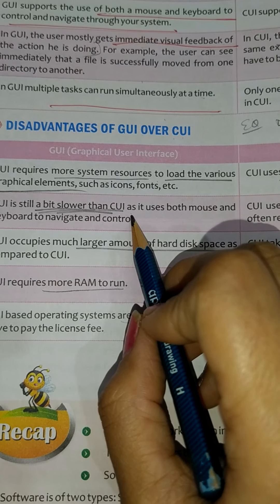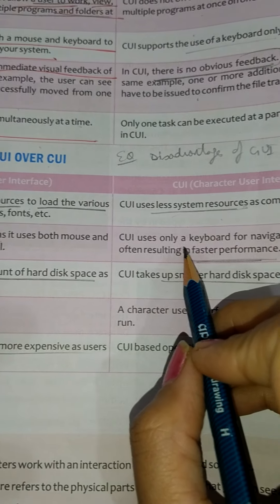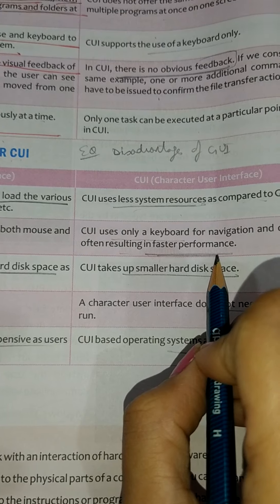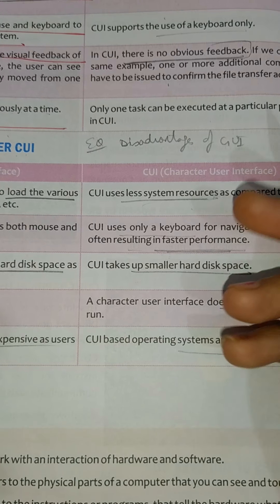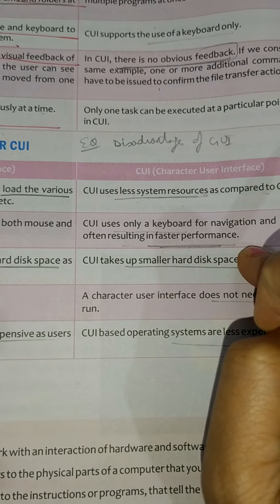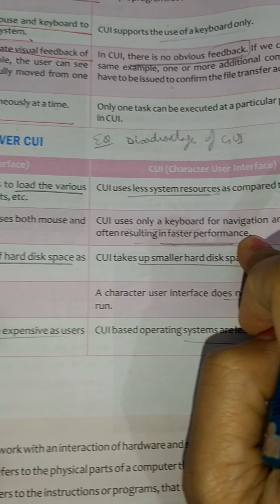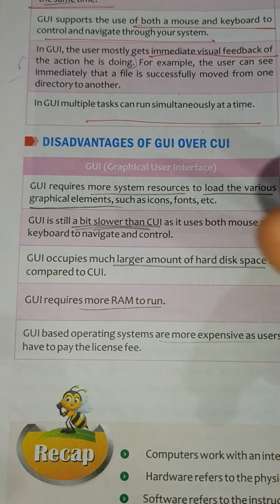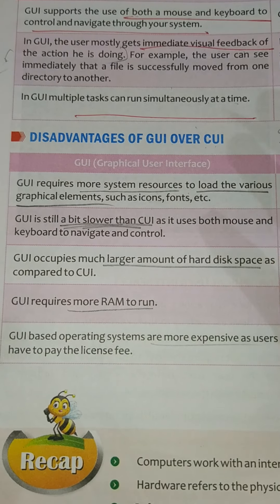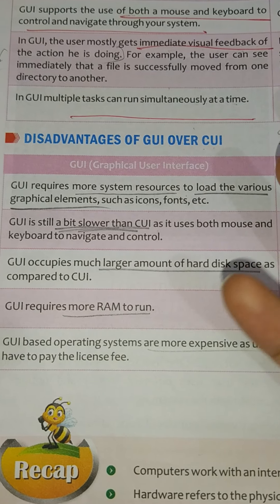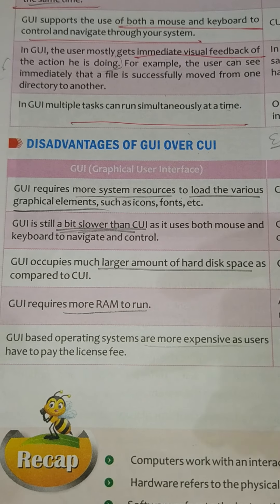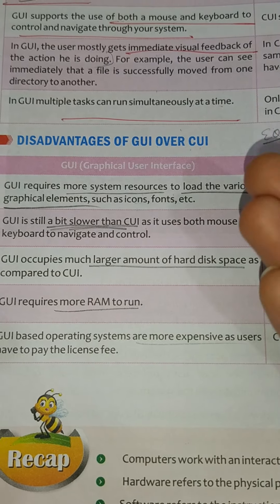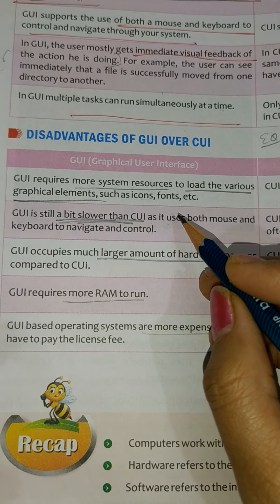Next, GUI is a bit slower than CUI. In CUI we use only the keyboard, so the answer is very fast — one command gives one answer. So faster performance is there in CUI. GUI is slower compared to CUI because of higher memory usage. More icons, different types of fonts, and colors require more memory, so it also requires more time for searching or doing other work.